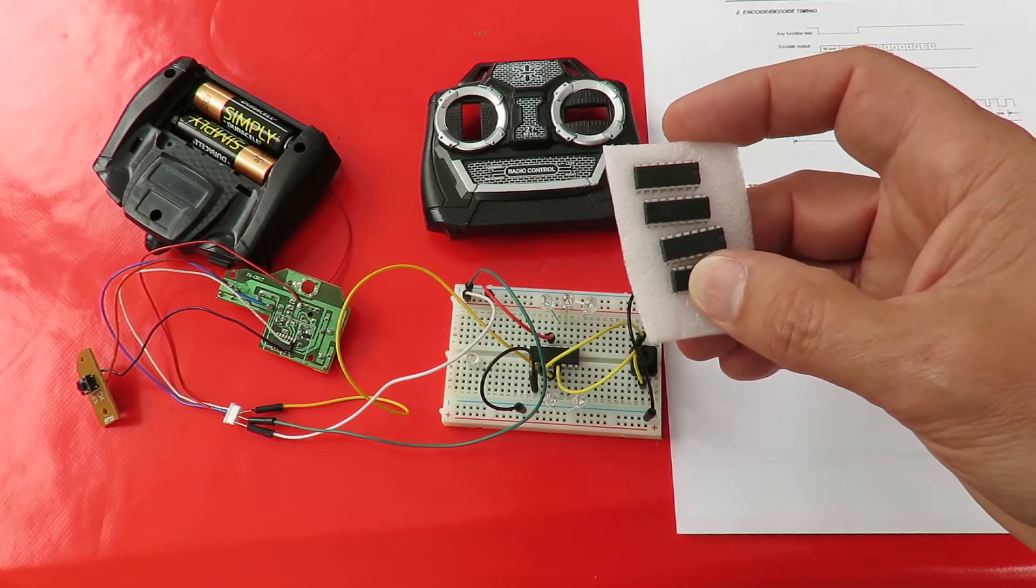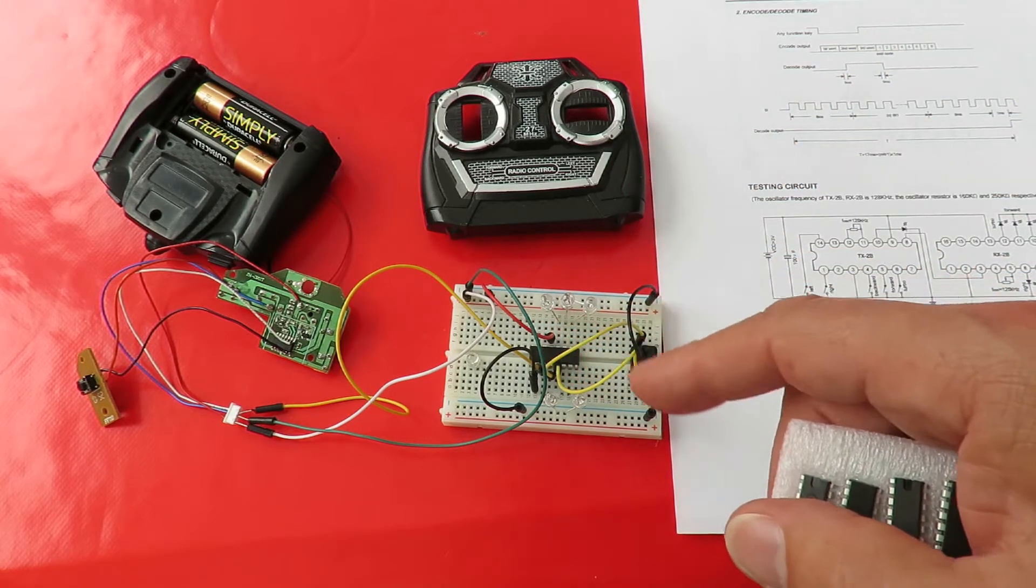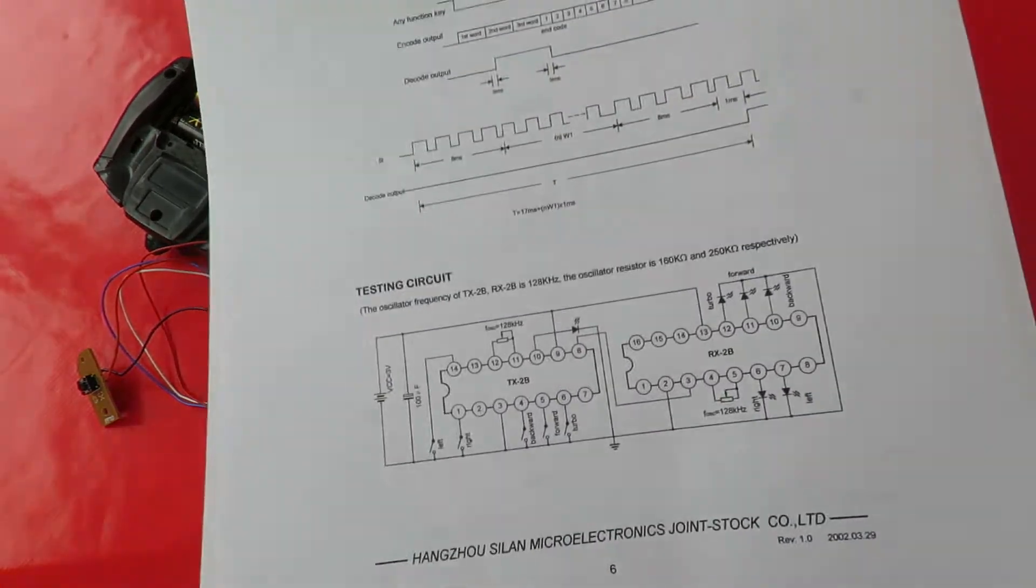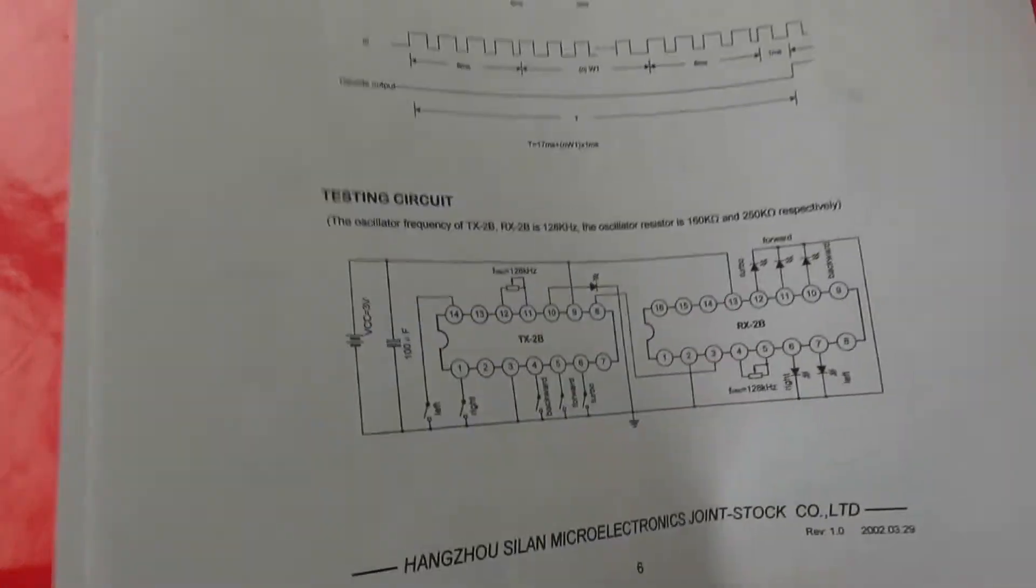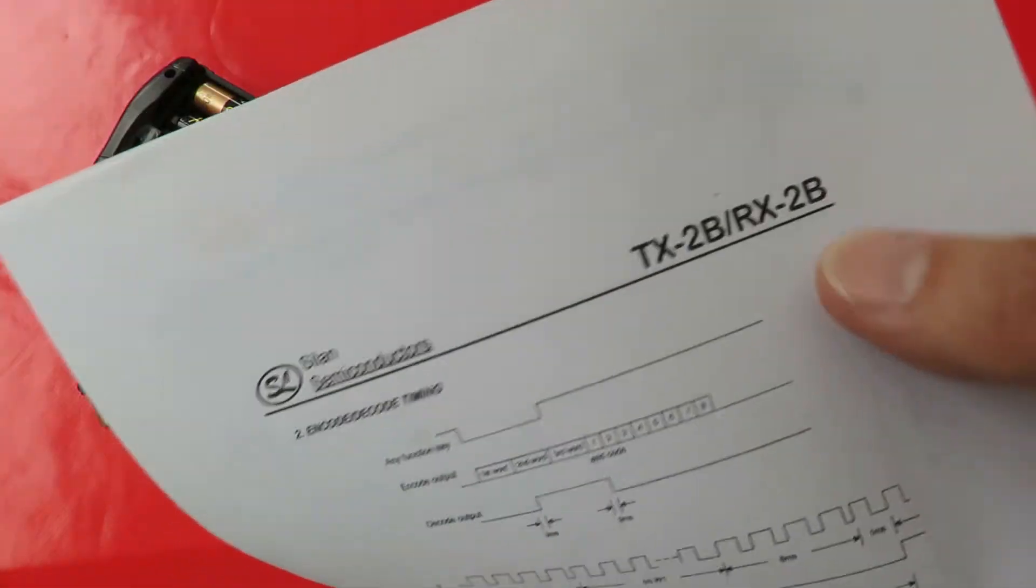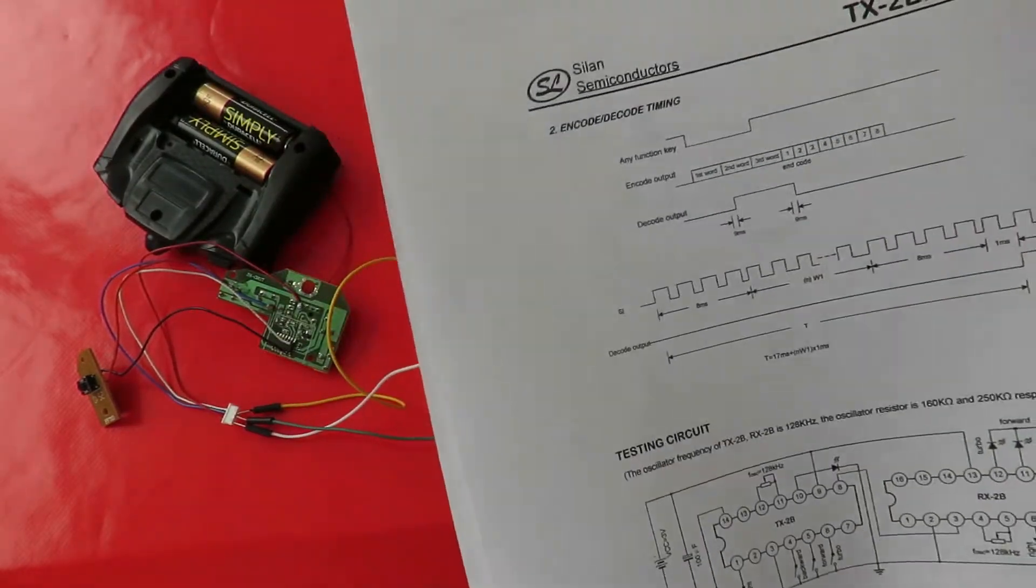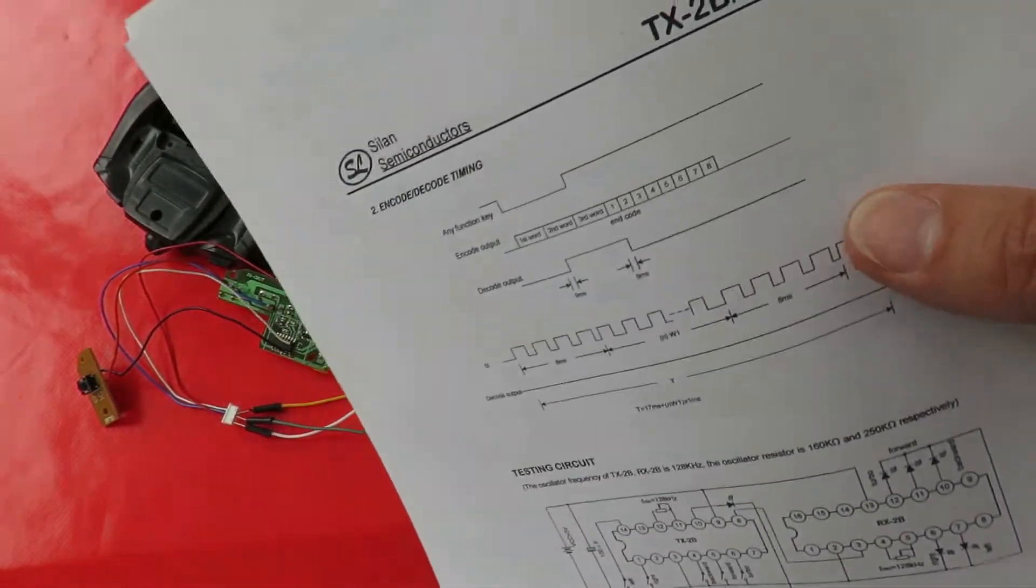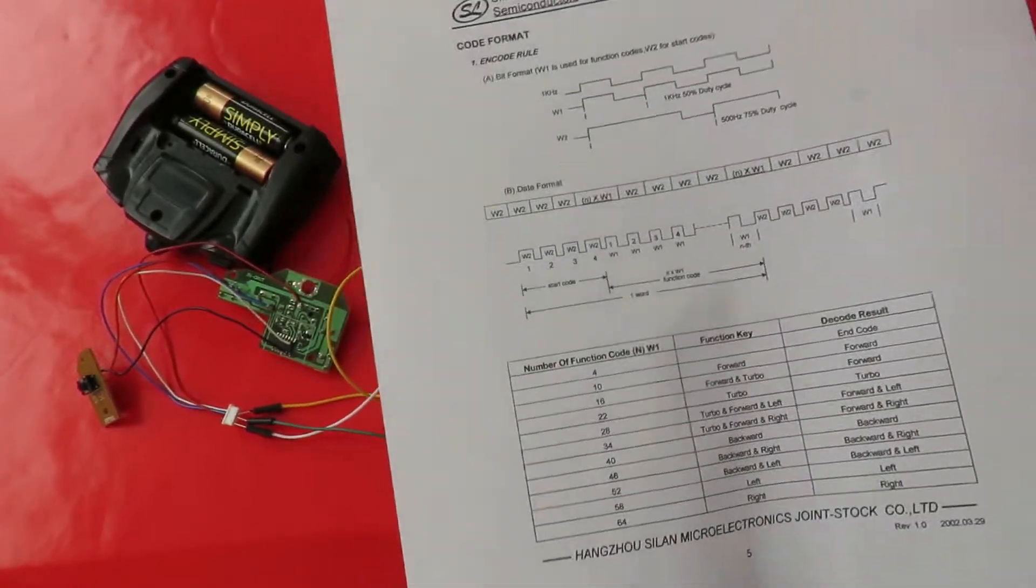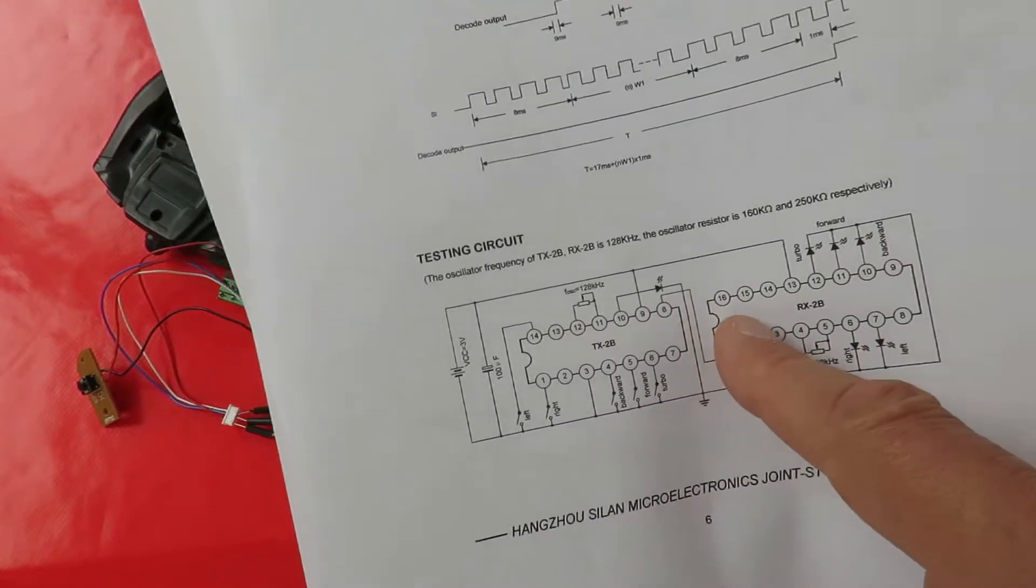That meant I didn't have a transmitter chip to build this breadboard circuit I wanted to build - this test circuit. There's lots of different producers for these chips, and when you go through their data sheets, they usually show you this test circuit. It doesn't need you to build the radio transmitter and receiver circuitry.